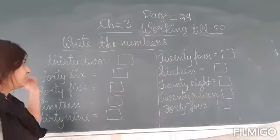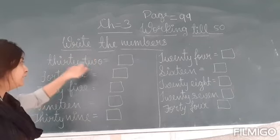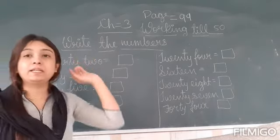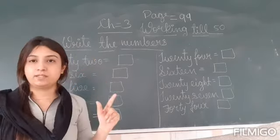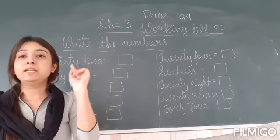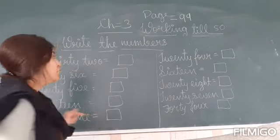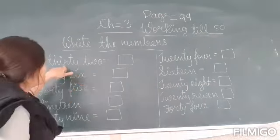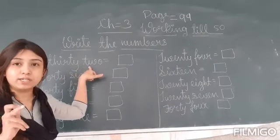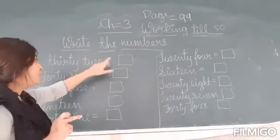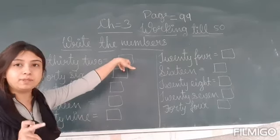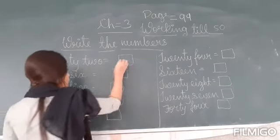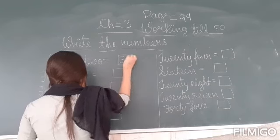First, students, see writing numbers. So 32 is there. Students, 32 is there in words. We have to convert it into numbers. Here writing numbers is given. So 32 is there in words and we have to write it here in numbers. So 32 is there — we have to write in numbers: 32.